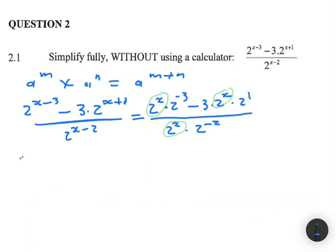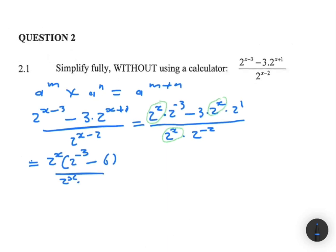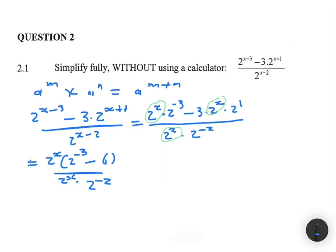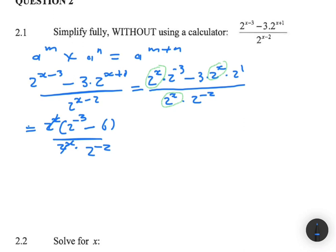After canceling 2^x, we're left with 2 to the minus 3, minus 3 multiplied by 2 — which is just 6 — all divided by 2 to the power x multiplied by 2 to the minus 2. We cancel 2^x with 2^x, leaving 2 to the power minus 3, that is 1 divided by 8, then minus 6, all divided by 2 to the minus 2, which is 1 divided by 4.